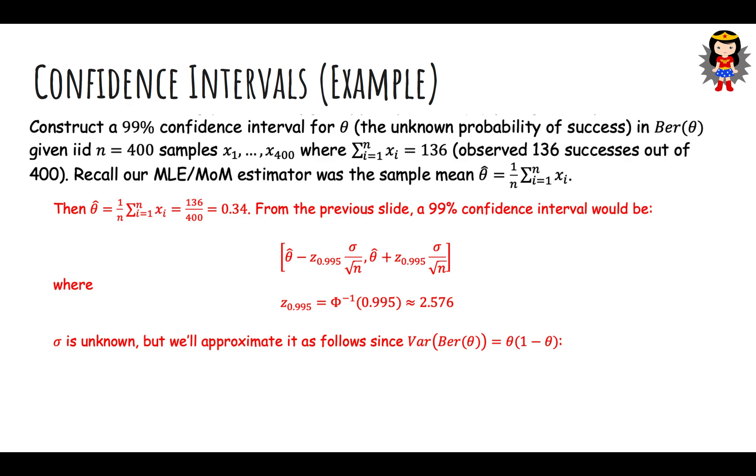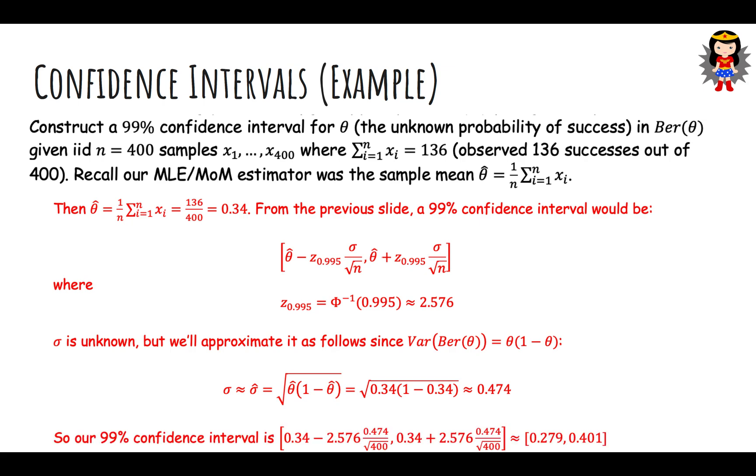Sigma is unknown, unfortunately. The sigma is the standard deviation of a single sample. But thankfully, the variance of a Bernoulli theta is theta(1 minus theta), so the standard deviation is the square root of that. But we don't know theta, so we plug in our estimator theta hat for theta. Our approximate standard deviation is 0.474. For the confidence interval, you just plug in the formula - 0.34 plus or minus 2.576 standard deviations away. The standard deviation of the sample mean is the standard deviation of a sample divided by the square root of the number of samples.